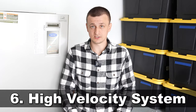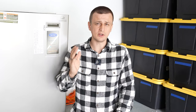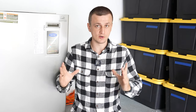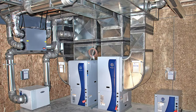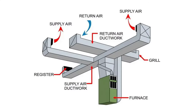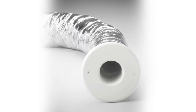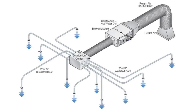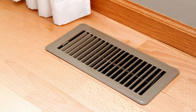Next up is a small duct high velocity system. This is very similar to a regular HVAC system, but it's usually used in homes where there's not enough room for the big metal ducts that are normally used. Instead of those, they use small round ducts spread out throughout the house into every single room. And the vents, instead of big nice grills, are just a little circle.